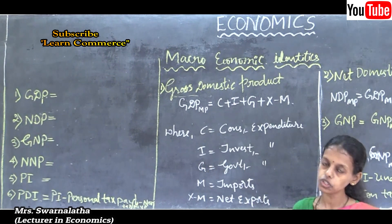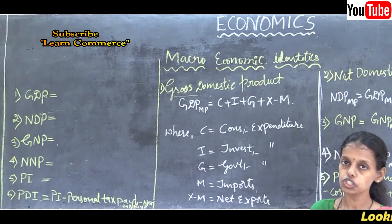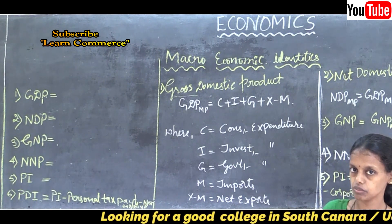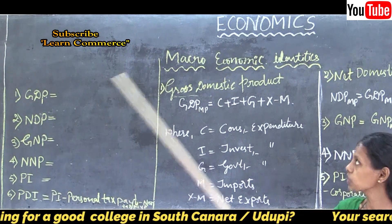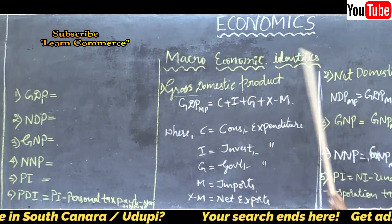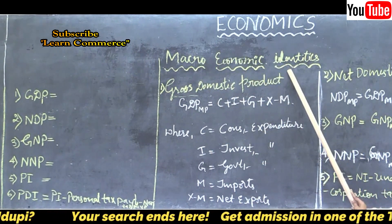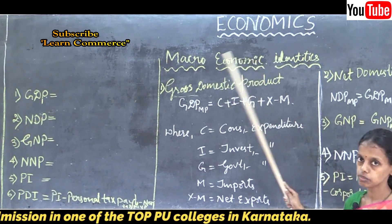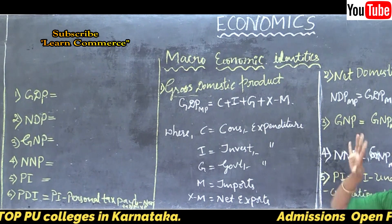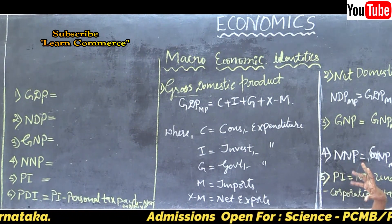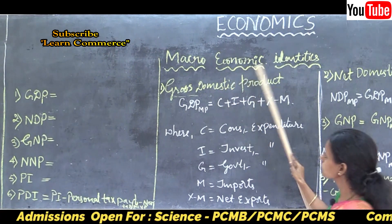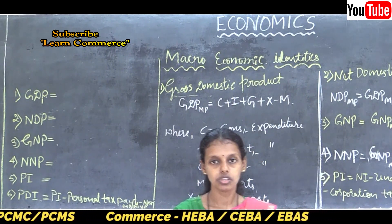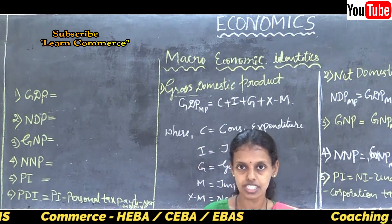Before going to calculating national income, we should know what are the things involved in calculating national income, under the heading macroeconomic identities. Identities are the proof to see how macroeconomics is working — just like ingredients you use for making food.